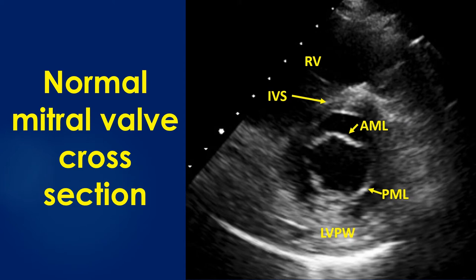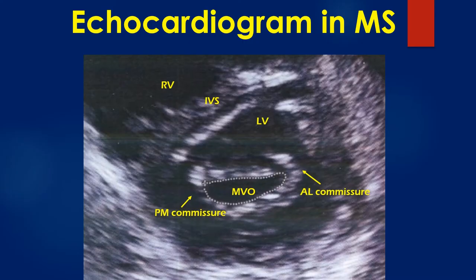The leaflets of a normal mitral valve are thin, pliable, non-calcified, and open well in diastole with a valve area of 4 to 6 cm². Opening of a normal mitral valve may be reduced in low cardiac output states even without significant mitral stenosis.